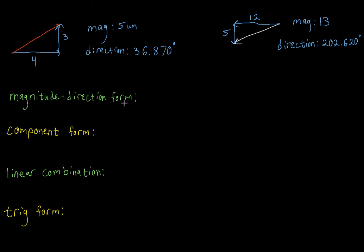So let's look at different ways that we can write vectors. My personal favorite way of writing vectors is to be able to graph it. Explaining these vectors graphically is perfect, because a vector is made up of a magnitude and a direction — so I can physically see the magnitude, or the length of this vector, and I can see the direction of it. But sometimes it's not always feasible to be able to draw out those vectors.